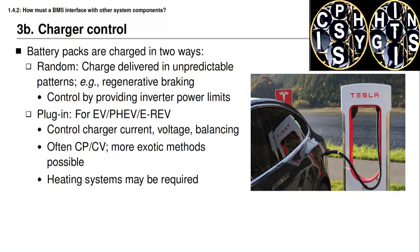Lithium-ion cells can safely accept much faster charging when they are warm than when they are cold. Some battery management systems implement heating that activates when the vehicle is plugged in for charging. The heating system is powered directly from the grid, so battery energy is not wasted, and it makes the battery pack last longer in the sense that it can charge more quickly without causing damage.